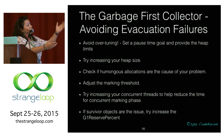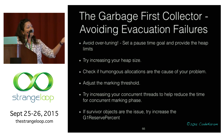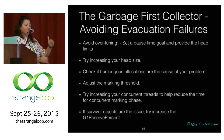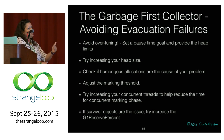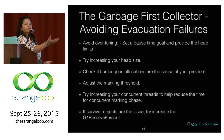There's also humongous allocation — I'll cover that shortly. Finally, G1 reserve percent: sometimes an evacuation failure occurs because you're running out of survivor space. G1 has a false ceiling called G1 reserve percent, defaulting to 10%. Try increasing it — G1 caps it at 50%. This gives more space to age objects so you're not prematurely promoting them.